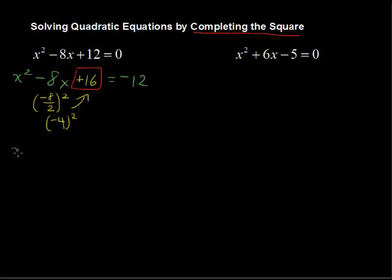So let me just rewrite that so we're clear on that. I've got x squared minus 8x plus 16 equals negative 12. Whatever I add to one side, I've got to add to the other side. So, equals negative 12 plus 16.